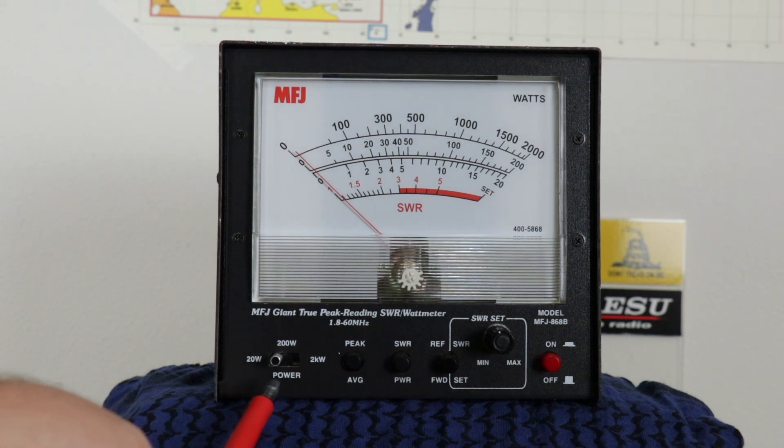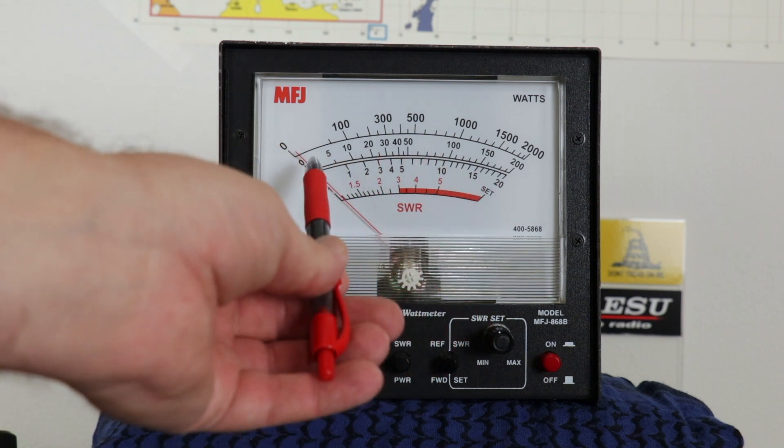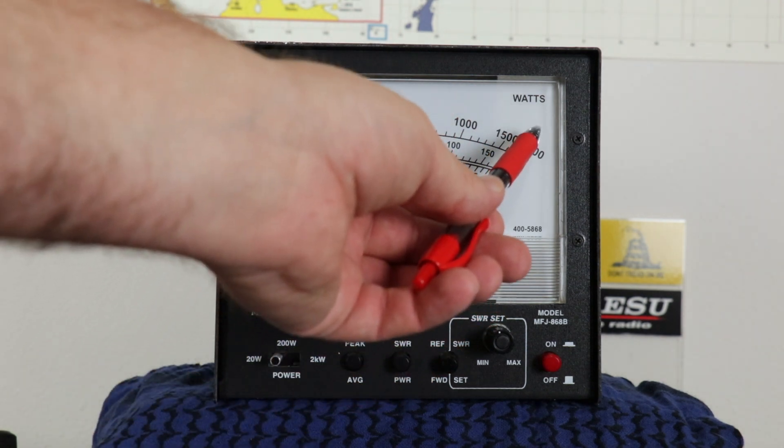You have a selector switch for the power: 20 watts, 200 watts, or 2,000 watts, and there's a corresponding scale for each one: 20, 200, and 2,000.